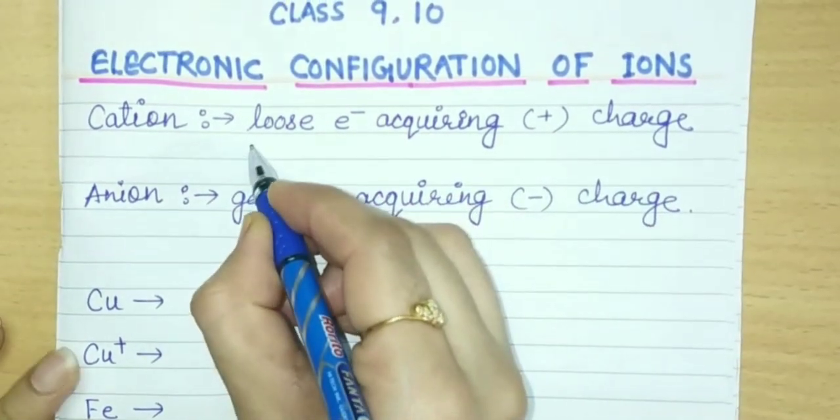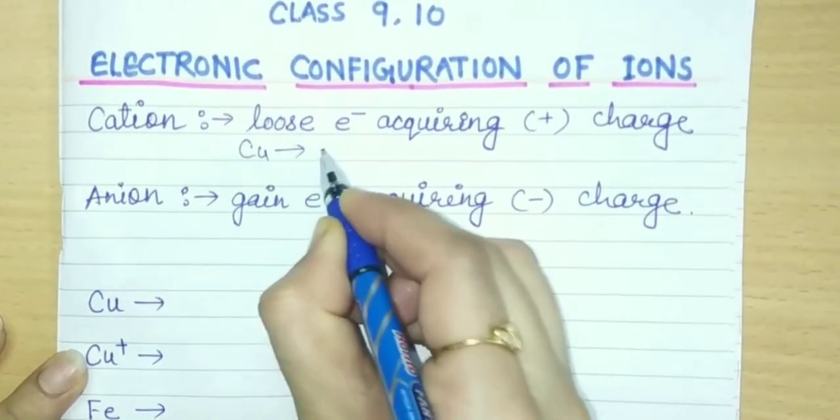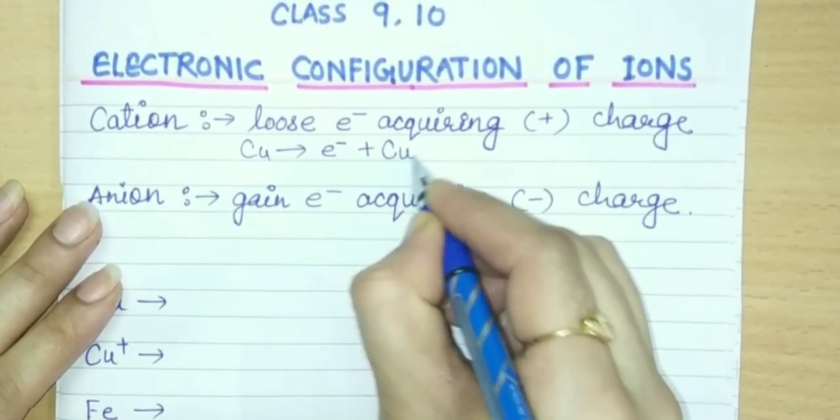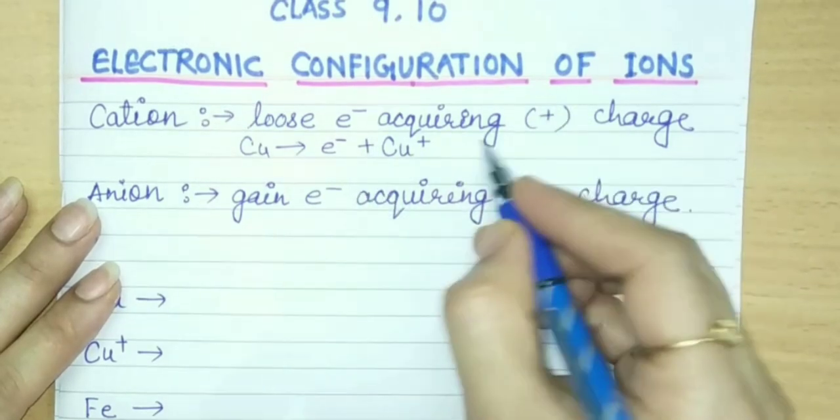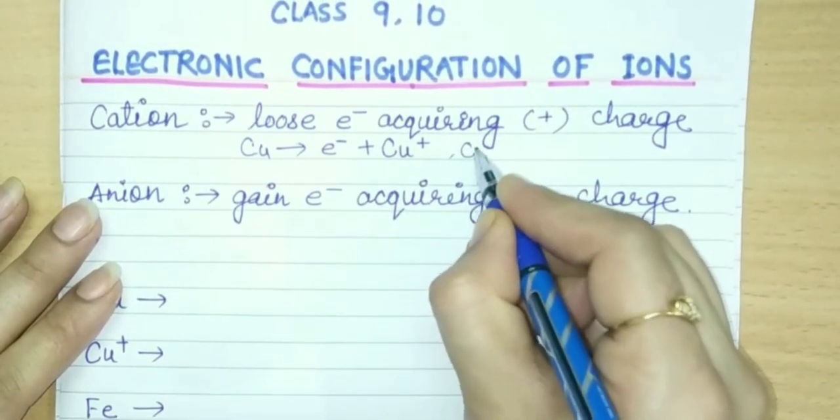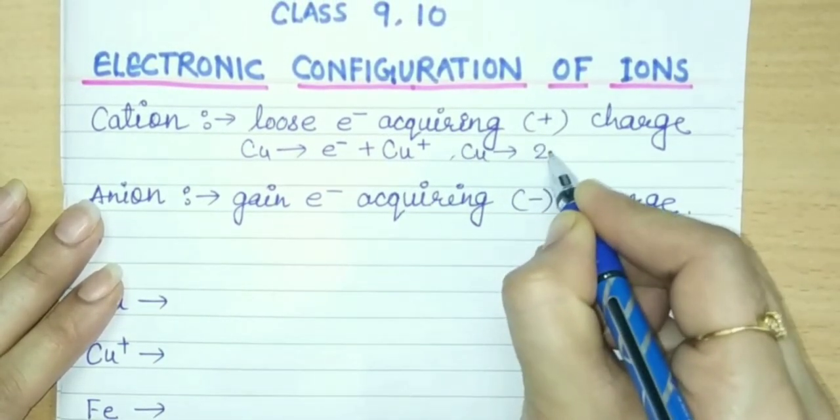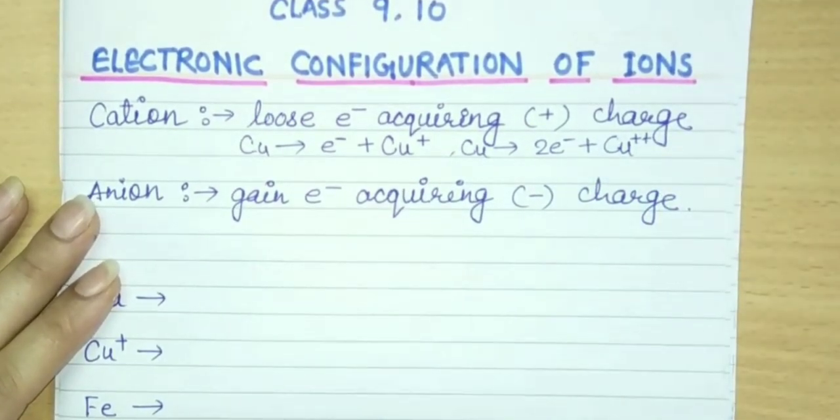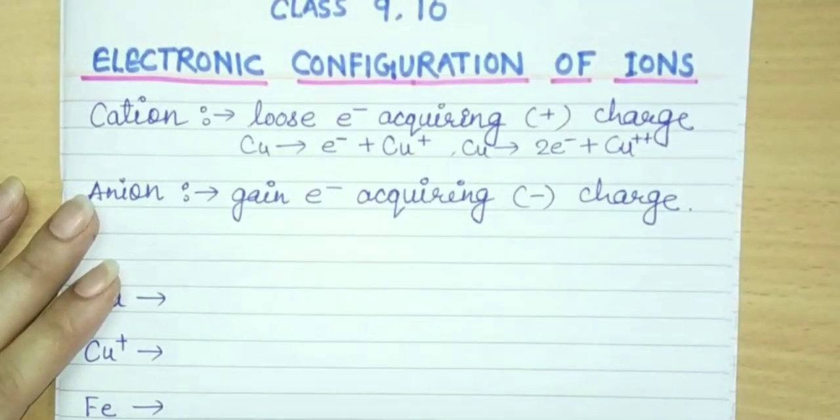Suppose we take an example of copper. If copper has lost one electron, what will be the charge on it? Cu positive. Suppose it has lost 2 electrons, Cu 2 positive. So this is the example of cations. Now come on to anions.